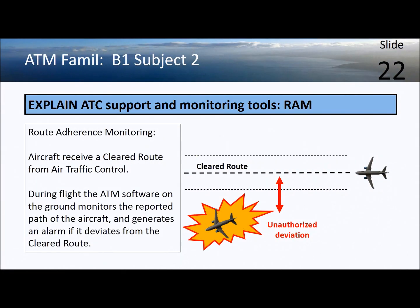RAM acts in a similar way to CLAM, but with regard to the lateral route rather than the flight level. It raises an alarm if the aircraft deviates significantly beyond the allowable limits for the planned route.